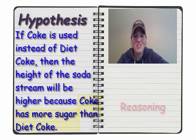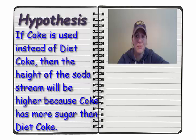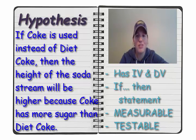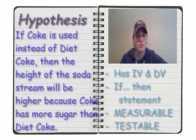A hypothesis does not have to be correct. It just has to have your independent and dependent variable. It has to have an if, then, because statement. It has to be measurable and it has to be testable. If you have those components and your hypothesis turns out to be wrong, it's okay. It's the reason we do the experiment.